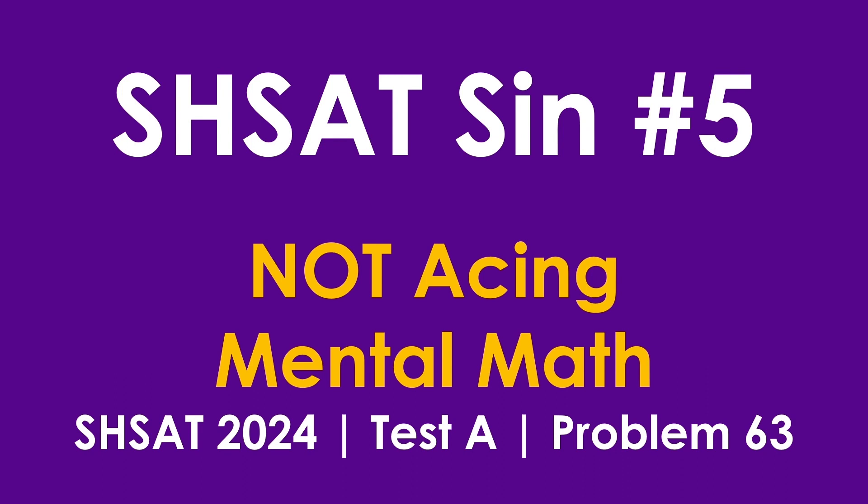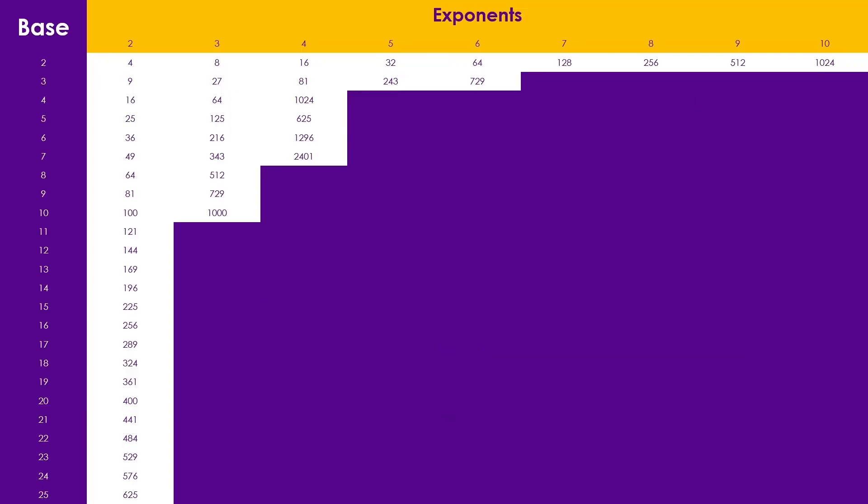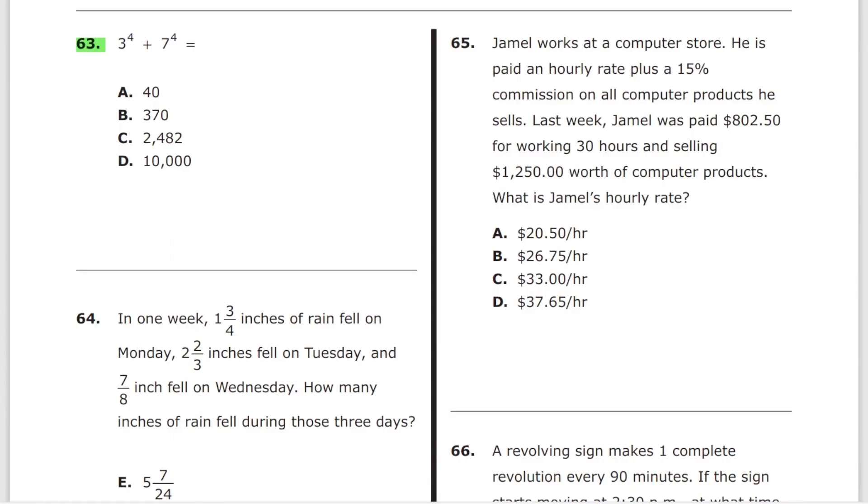SHSAT sin number five is not acing mental math. Most of you are totally conducting this sin. We are going to cover problem number 63 from test A of SHSAT 2024. Before we jump to the problem, really quickly, in order not to conduct the sin, simply memorize this table. All right, now the problem. Estimate three to the fourth power plus seven to the fourth power. Most of you don't know these.